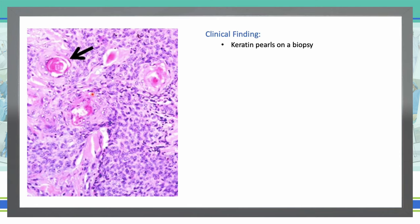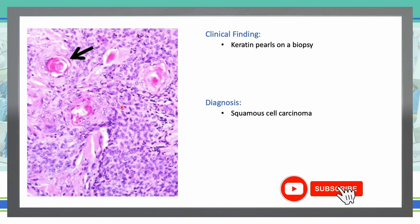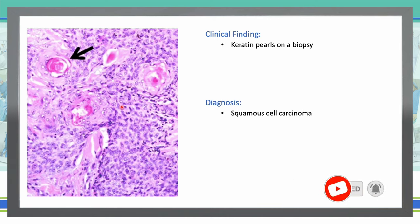Keratin pearls on biopsy are found in regions where abnormal squamous cells form concentric layers — also called epithelial pearls. You are going to see these in squamous cell carcinoma.